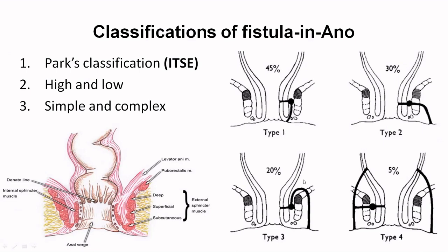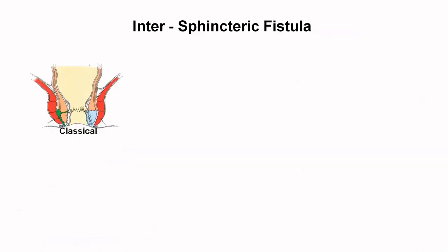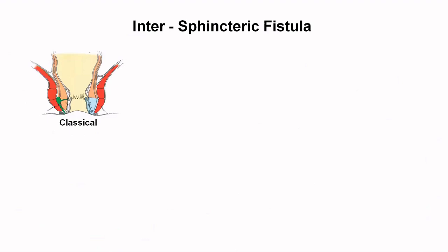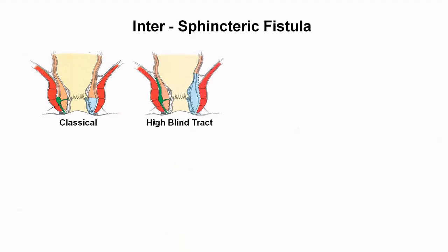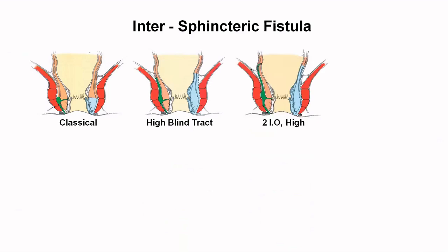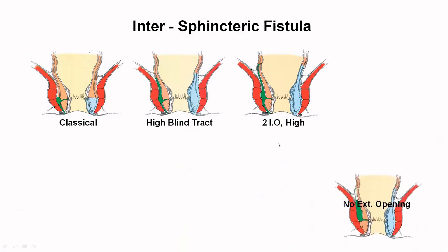The names are based on external sphincter involvement. Going into the inter-sphincteric fistula, the classical type has an internal opening, external opening, and the perianal space involved is the inter-sphincteric space. It can have a high blind tract — you need to lay open in this plane and then drain the high blind tract. Sometimes inter-sphincteric fistulas can have two internal openings: one high and one low.